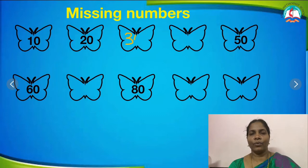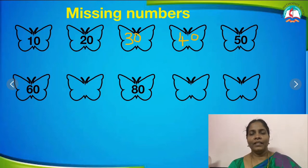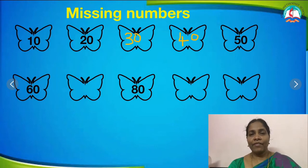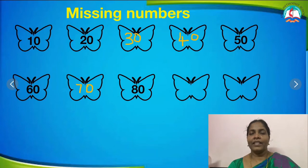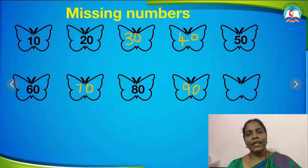After 30 is 40 — 4 and 0. 50 is here and 60 also here. After 60 is 70 — 7 and 0. After 70, 80 is here. After 80 is 90 — 9 and 0. After 90 is 100.